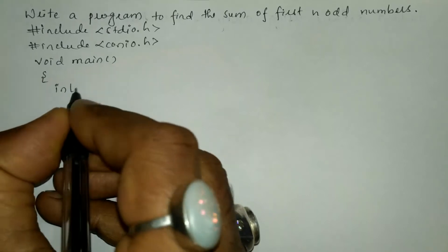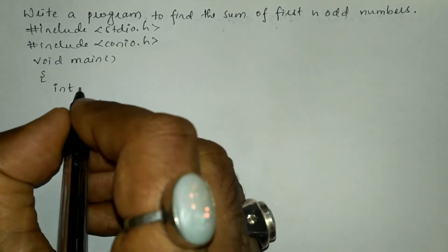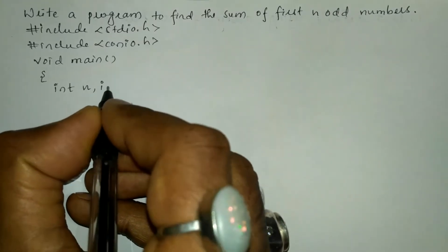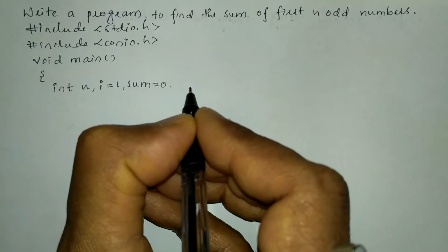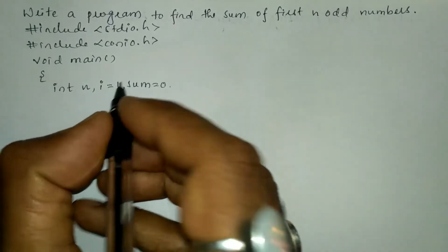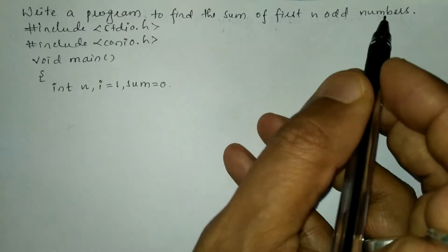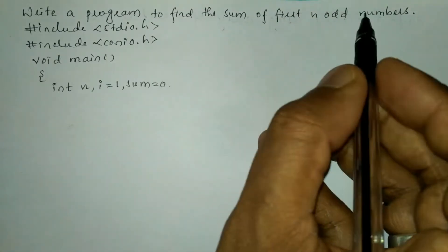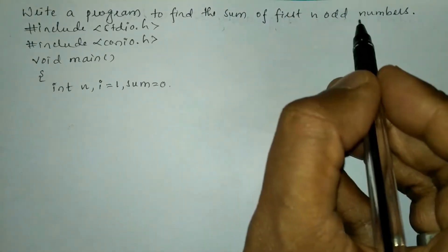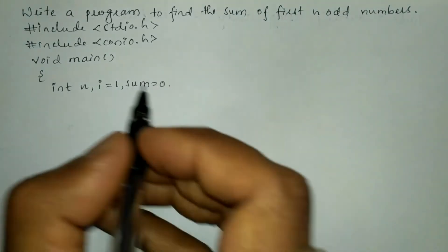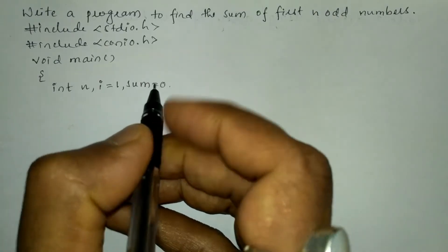Here I'm going to declare all the necessary variables of type integer: n, comma i is equal to one, and sum is equal to zero. I have taken i equal to one because we have natural numbers that always start from one. Since we are finding the sum of first N odd numbers, we set sum equal to zero.